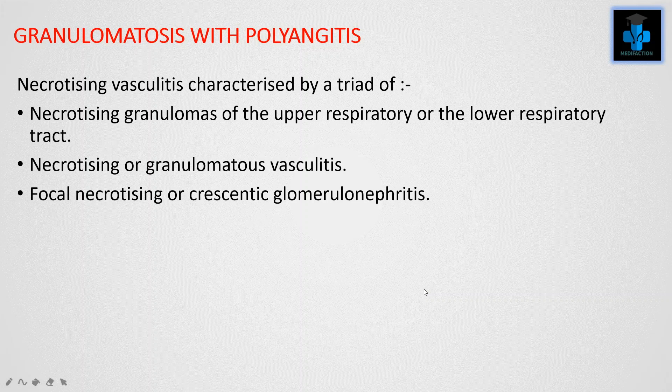Wegener's granulomatosis features necrotizing granulomatous vasculitis of the upper and lower respiratory tract, along with focal necrotizing or crescentic glomerulonephritis.